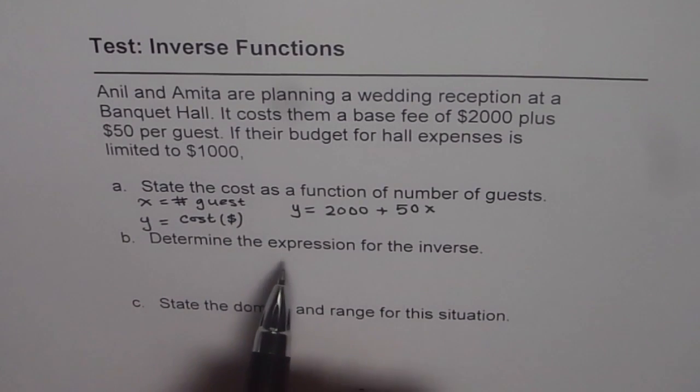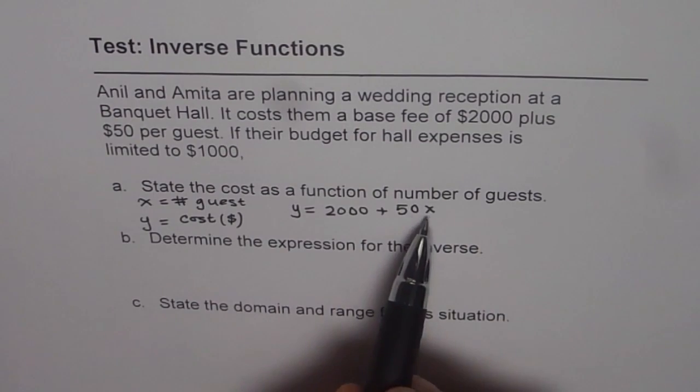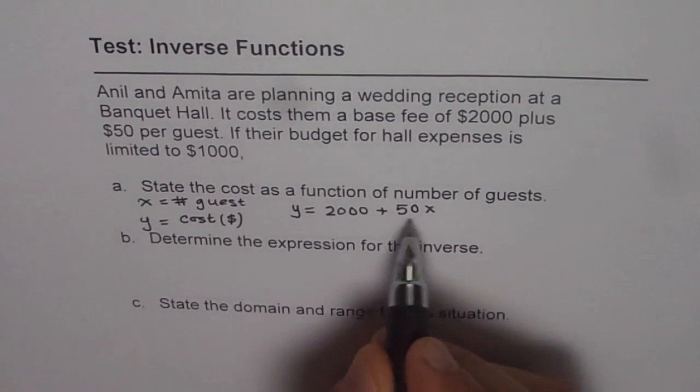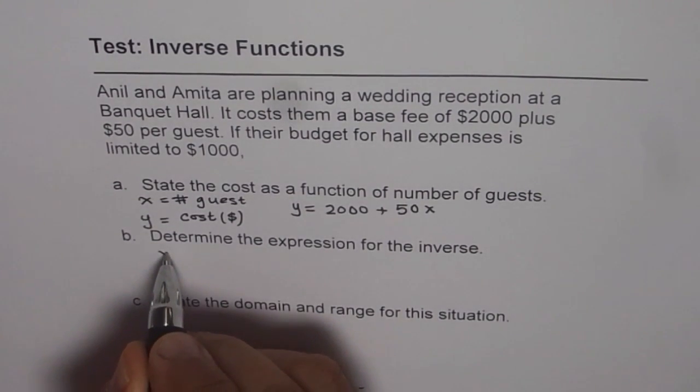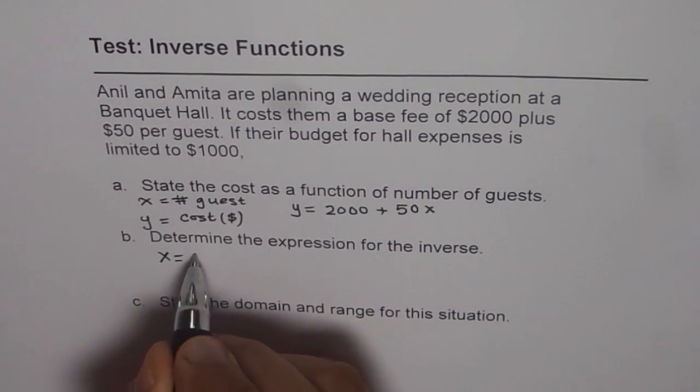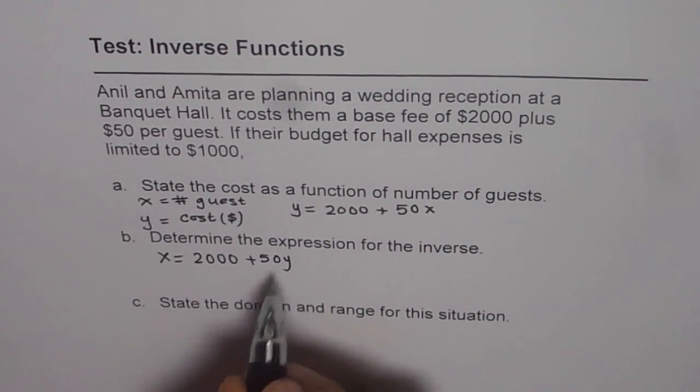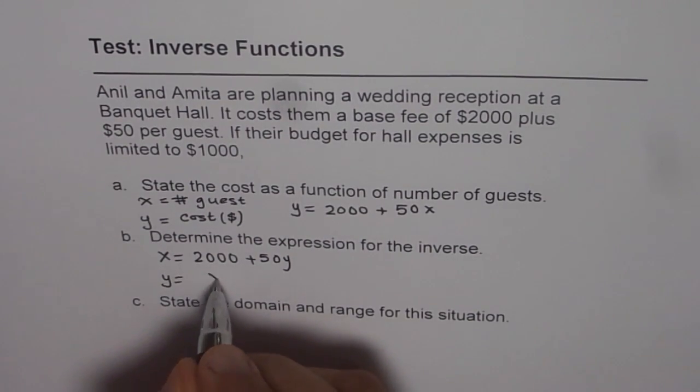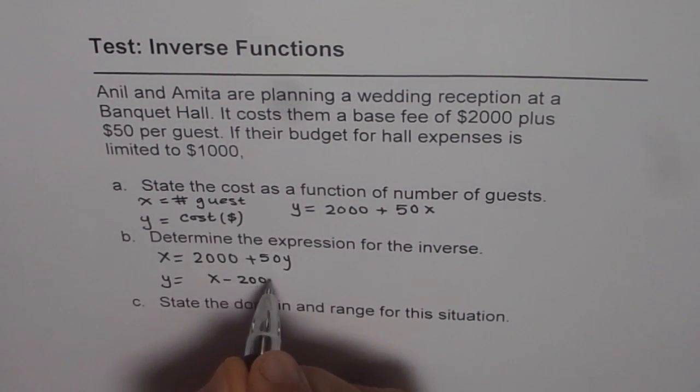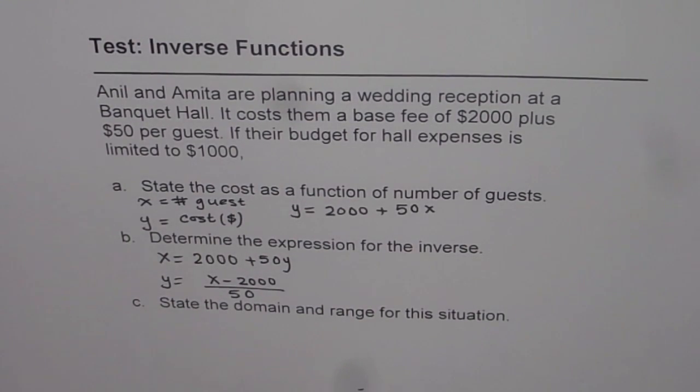Now part B is determine the expression for its inverse. To find inverse, you swap x and y. So we will rewrite this equation. x equals 2000 plus 50y, and then solve for y. You get y equals x minus 2000 divided by 50.